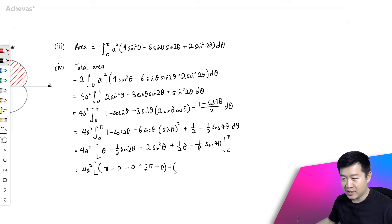So this minus subbing 0 is 0, 0, 0, 0, 0. So all these terms will be 0. So I'm going to be left with 4a², this π plus this is going to be 3/2 π. So the area is going to be equal to 6π a².